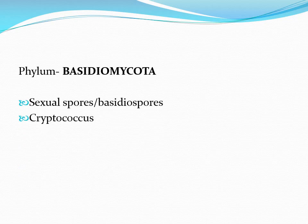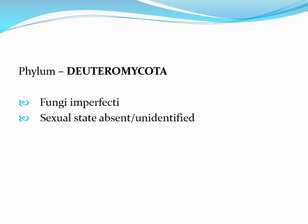Phylum Basidiomycota produces basidiospores; Cryptococcus is the representative example. The final phylum is Deuteromycota, also known as Fungi Imperfecti — either their sexual state is absent or has not been identified to date.